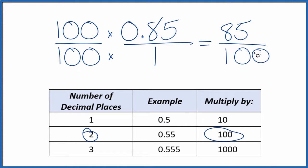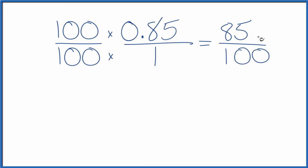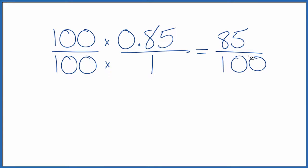We can simplify this a little bit further though. Let's give ourselves some room here. It looks like 5 will go into 85 and 100 evenly. If you divide 85 by 5, you get 17. If you divide 100 by 5, you get 20.